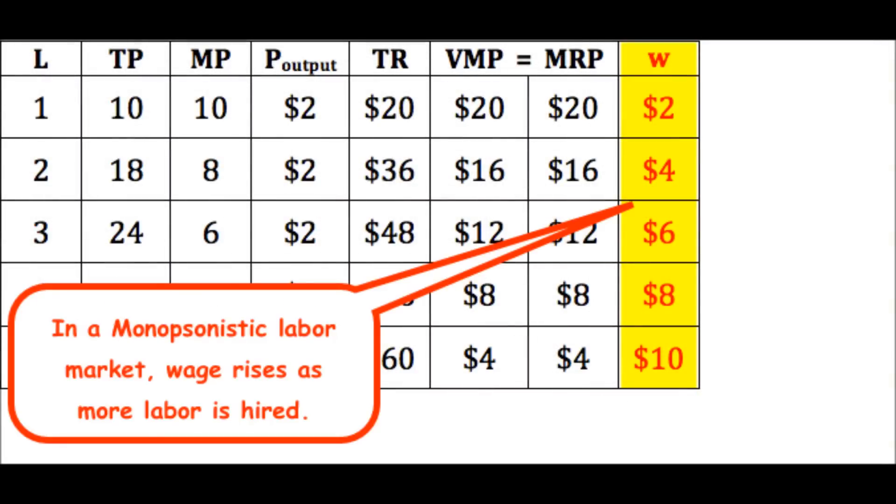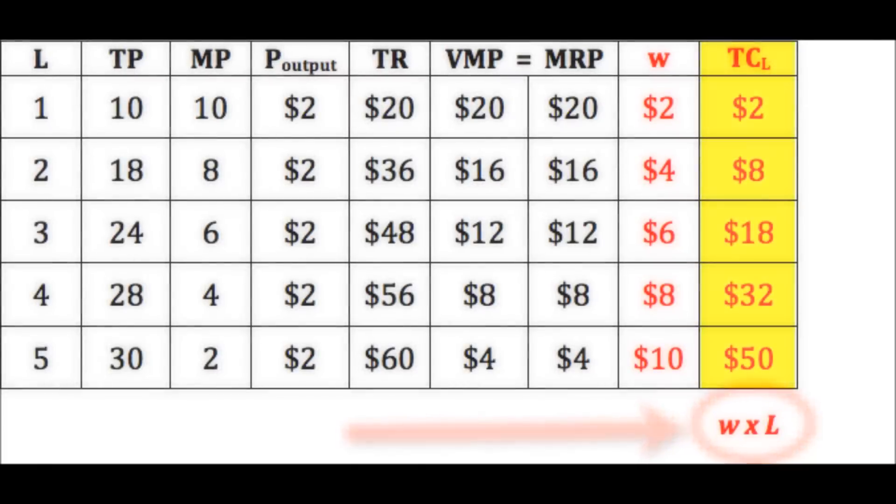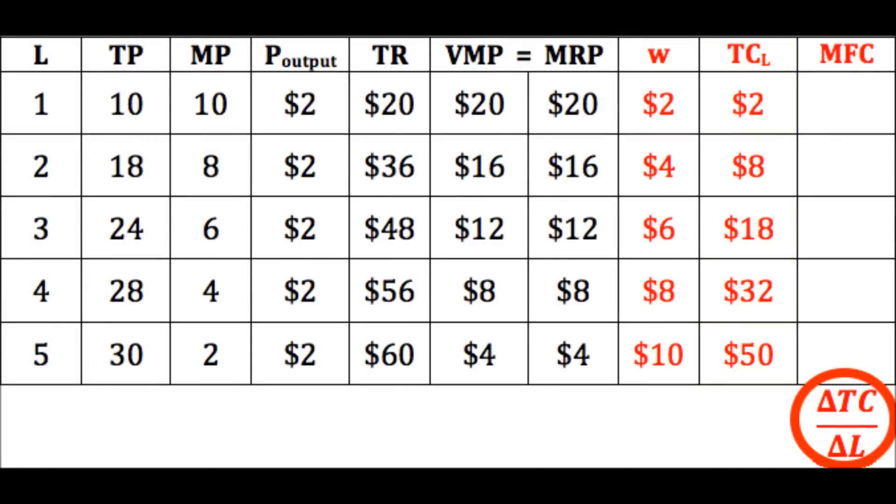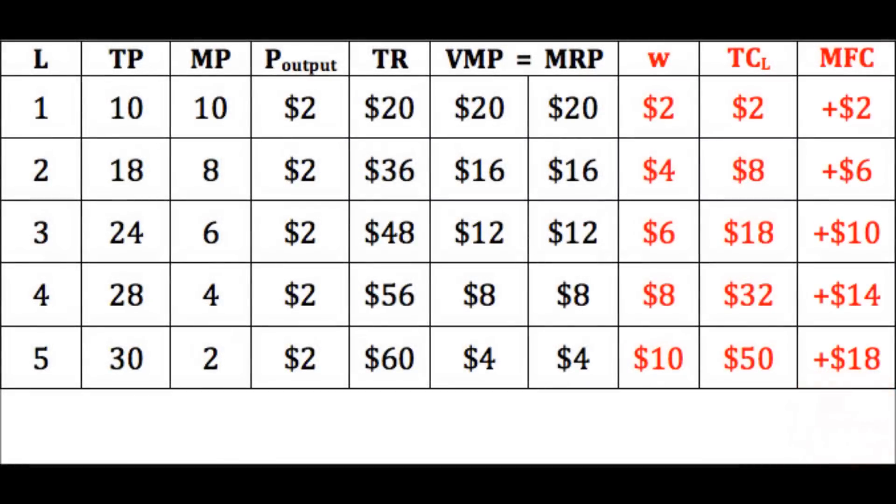Remember, to get more employees to work for you, you'll need to offer a higher wage. Because the wage rises as more labor is hired, the total cost of hiring the labor, wage W times L, the number of workers, rises much more quickly than in a competitive market where the wage was constant. This, in turn, alters marginal factor costs, defined as the change in cost over the change in the resource labor, substantially. The marginal factor cost values end up being higher than the wages.